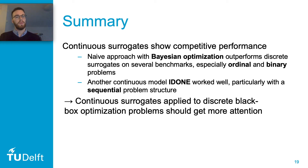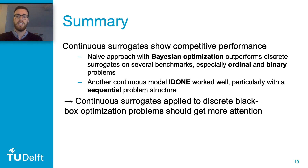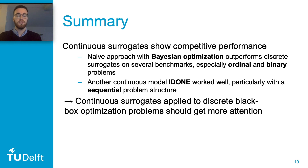To summarize: continuous surrogates applied to discrete black box optimization problems actually show pretty competitive performance. Especially the naive approach with Bayesian optimization showed to outperform the discrete surrogates on several benchmarks. The point I'm trying to make is that perhaps continuous surrogates applied to discrete problems should get more attention in this field of research. Thank you for listening.